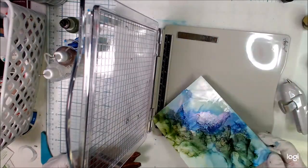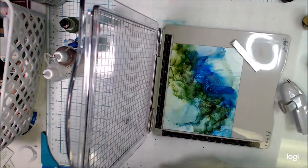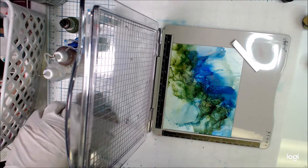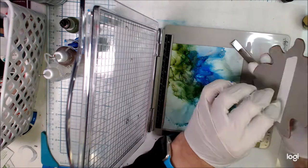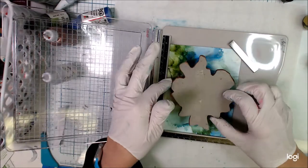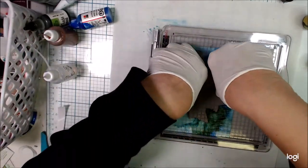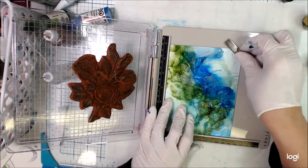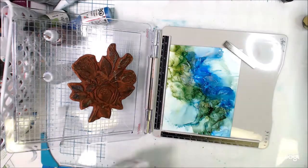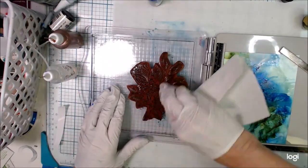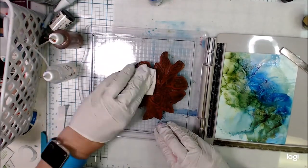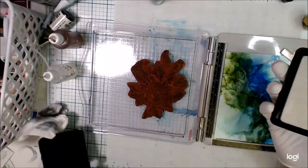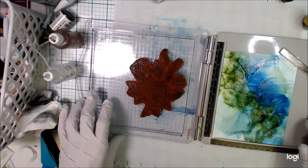Now I'm going to grab my stamp positioner. This is a Tim Holtz one. It's not on the market anymore but there's any number of other stamp positioners. I think you can still get it if you're in the UK or overseas, you just can't get it in the US any longer. So I'm going to look at this and see where I want to position that. I'm going to clean my stamp, make sure I've got all the black ink off of there.